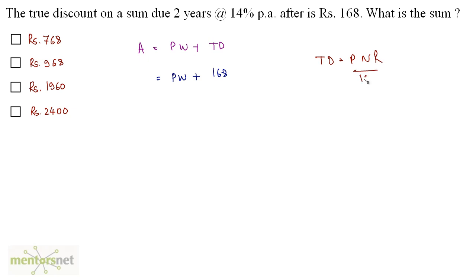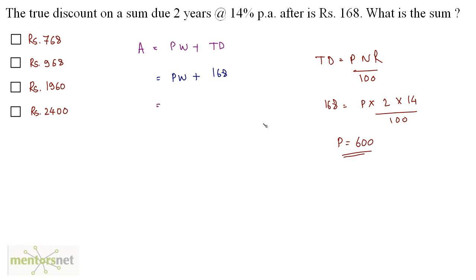True discount equals PNR upon 100. So 168 equals P times N (2 years) times R (14) divided by 100. Solving this gives P equals 600 rupees, which is the present worth. Therefore the amount is 600 plus 168, which equals 768 rupees. This is the sum, and our answer is option A.